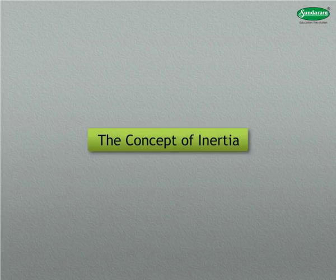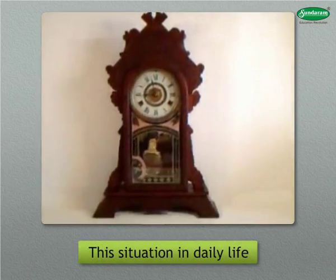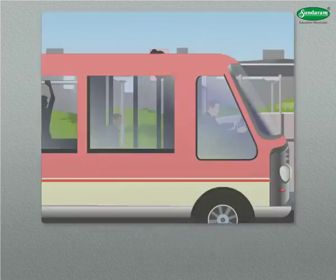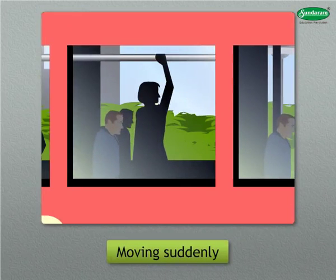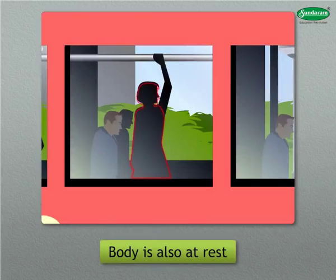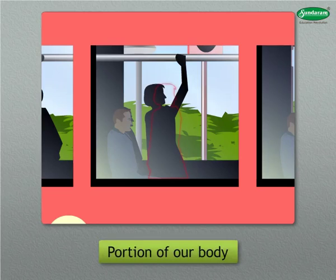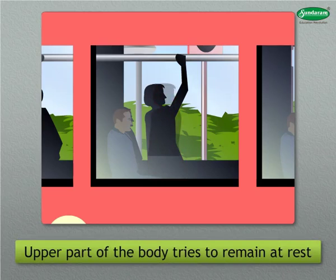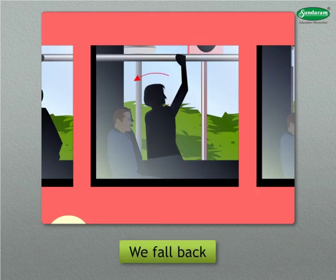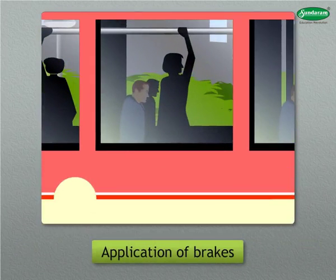The concept of inertia. A body resists change in its state of rest or of uniform motion. You may have experienced this in daily life many times. When we travel by a bus and the bus starts moving suddenly from a rest position, we get a jerk. When the bus is at rest, our body is also at rest inside the bus. As the bus is put in motion, the portion of our body in contact with the bus acquires velocity. But the upper part of the body tries to remain at rest, so we fall back. The exact opposite situation occurs when a moving vehicle suddenly stops by application of brakes.